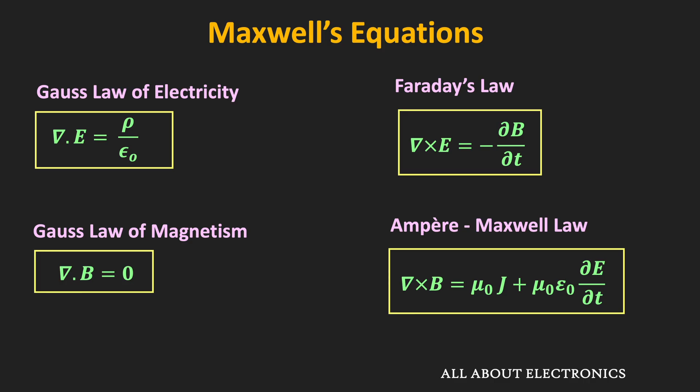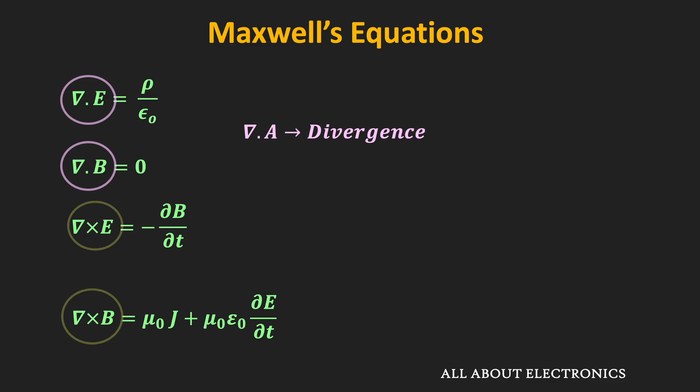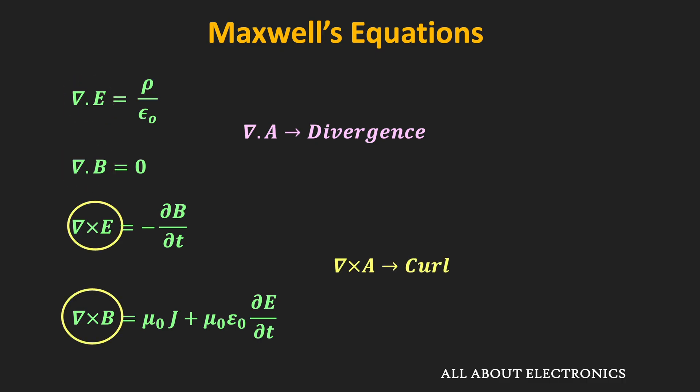For example, in the first two equations, the term del·A represents the divergence. Likewise, in the next two equations, the term del×A represents the curl. If we know that, then we can understand these equations properly and understand the Electromagnetic theory in a better way.